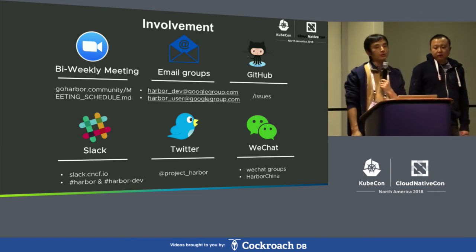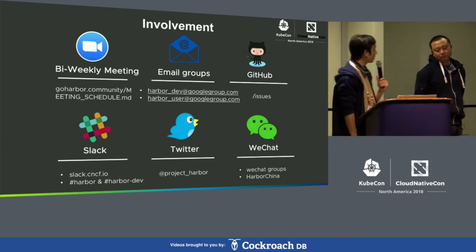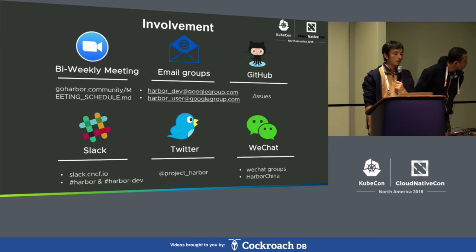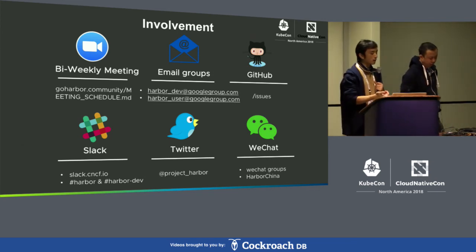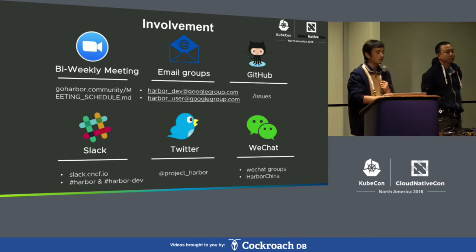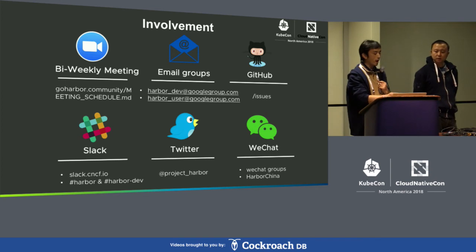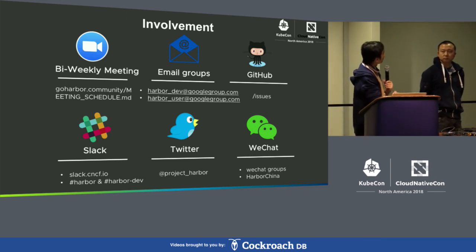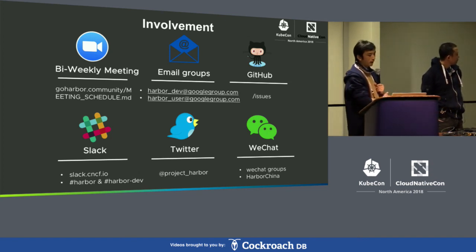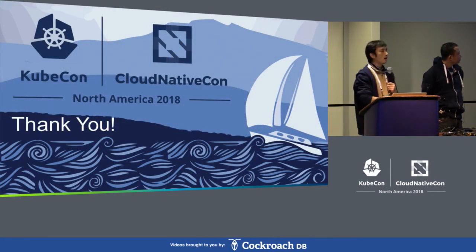Maybe you have a question: how can I get involved in the Harbor community? We have many ways. First, you're welcome to join our weekly meeting — you can find the meeting schedule in the GitHub slash goharbor slash community repo. If the time is not suitable for you, you can subscribe to the email group or send emails there. We also have Slack channels — you need access to the CNCF Slack to get an invitation. And we encourage you to follow us on Twitter — our account is Project Harbor.